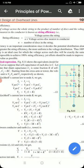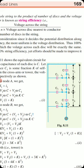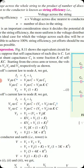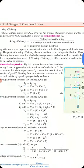Applying KCL at node A: I2 = I1 + i1. Writing in terms of voltage and reactance: I2 = V2·ωC, I1 = V1·ωC, and i1 = V1·ωC1. Substituting C1 = kC and simplifying, we get: V2 = V1(1 + k). This is equation 1.